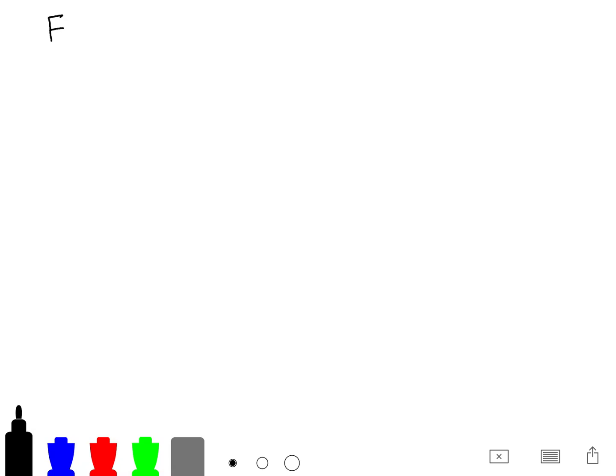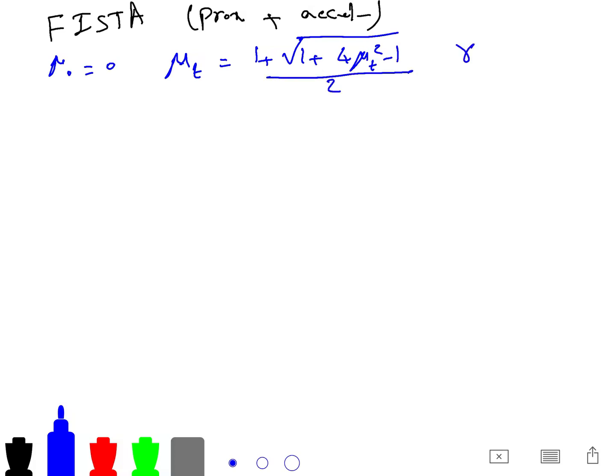Also I want to talk about FISTA, which is the prox operator plus acceleration which we use the momentum idea. So we want to minimize f of x. First we define mu_0 is equal to zero, and mu_t is equal to (1 + sqrt(1 + 4*mu_{t-1}^2))/2, and gamma_t is equal to (1 - mu_t)/mu_{t+1}.